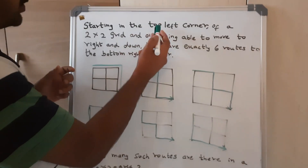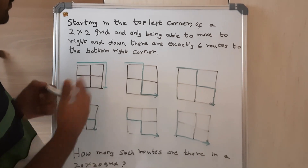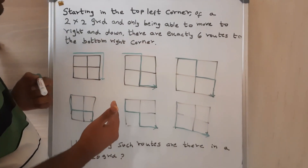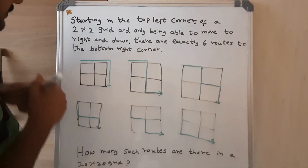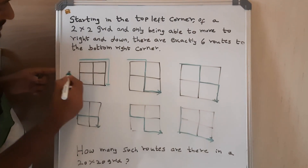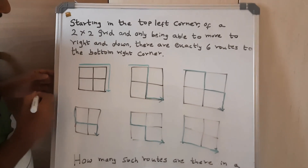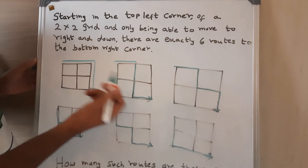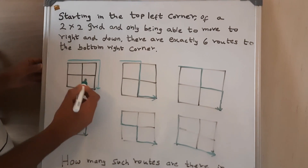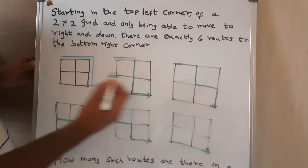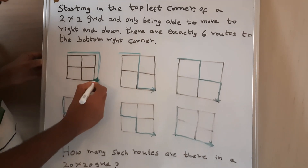Starting in the top left corner of a 2 by 2 grid and only being able to move to the right and down, there are exactly six routes to the bottom right corner. So in this 2 by 2 grid, you start from the top left corner — how many routes are there to reach the bottom right? I have listed down all six routes here.